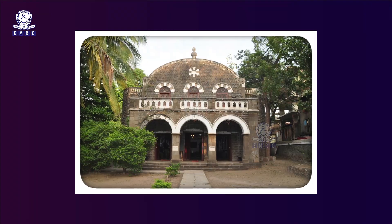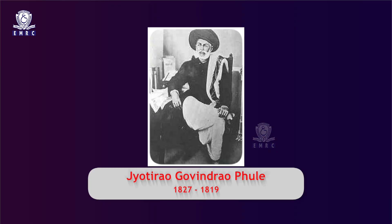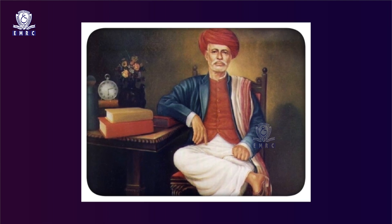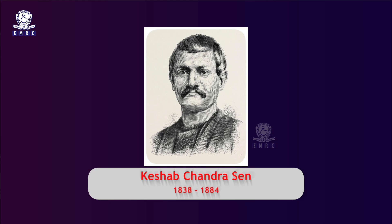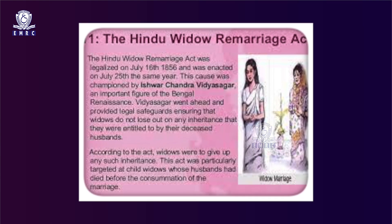Both Brahmo Samaj and Prarthana Samaj made influential efforts to prove that Hindu religious tradition was not the source of legitimacy for the distressed condition of women in society. Jyotirao Phule was the one to open the first girls' school in India. He is also credited with opening the first home for widows and a home for newborn girl children to protect them from female infanticide. The efforts of Vidyasagar, Keshab Chandra Sen, and D.K. Karve resulted in the enactment of the Widow Remarriage Act of 1856.